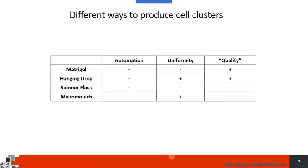In this table, I put a summary for all four methods — whether they are good or bad for automation, producing uniform cell clusters, and quality meaning physiological relevance. Matrigel is great — you could grow really fancy 3D cell cultures, but it generates a lot of different sizes of organoids and it's not very easily automatable. The hanging drop method is great for uniformity but not very easily automatable. Spinner flasks are a very economical solution — you could grow a lot of cell clusters in confined media, but in terms of physiological relevance it might not work. And then finally, the micro molds.